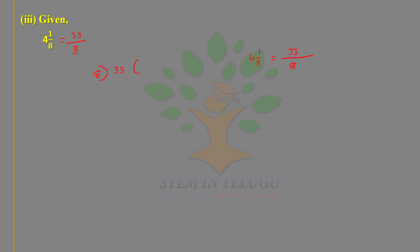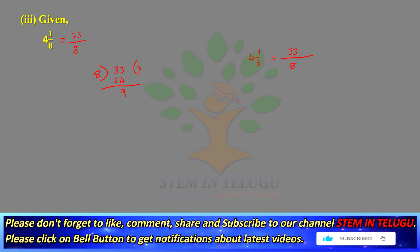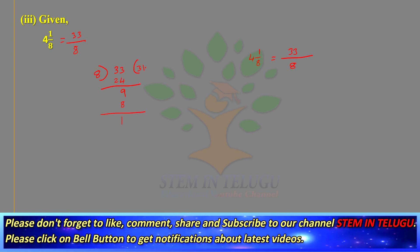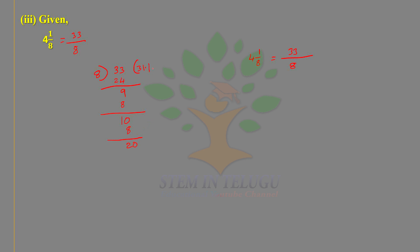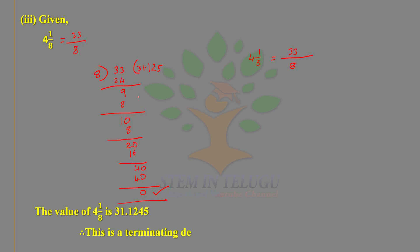Performing the division of 33 by 8: 8 goes into 33 four times giving 32, remainder 1. Bring down zero — 8 into 10 once giving 8, remainder 2. Bring down zero — 8 into 20 twice giving 16, remainder 4. Bring down zero — 8 into 40 five times giving 40, remainder 0. So the value of 4 and 1 by 8 is 4.125. Therefore, this is a terminating decimal.